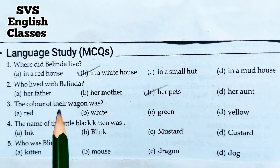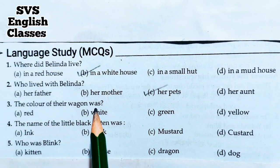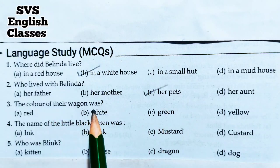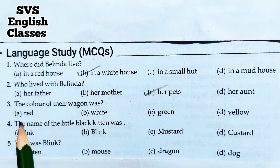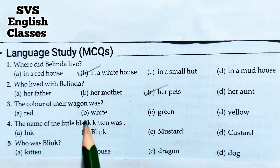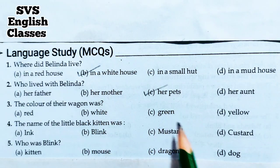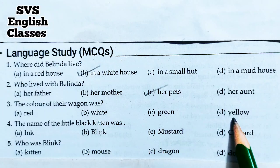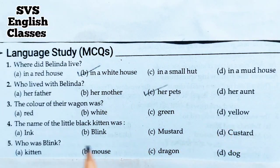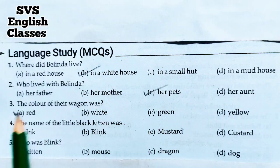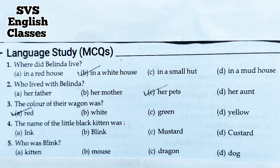Number three: What was the color of their wagon? A. Red (लाल), B. White (सफेद), C. Green (हरा), D. Yellow (पीला). The wagon in Belinda's house was red in color. So option A is the correct answer.